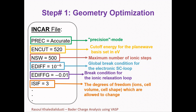ENCUT specifies the cutoff energy for the plane wave basis set in electron volts. It depends on the elements in your system, and I always recommend setting 130% of the largest cutoff energy from the POTCAR file in your INCAR file, which is always safe. For example, the cutoff energy of oxygen is 400 eV in the PBE functional, and I set 130% of 400 eV, which is 520 eV in the INCAR file. This depends on what type of element you have in your system.